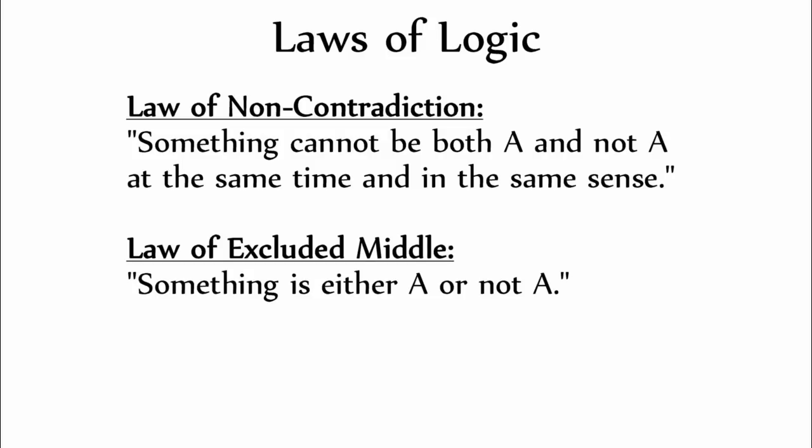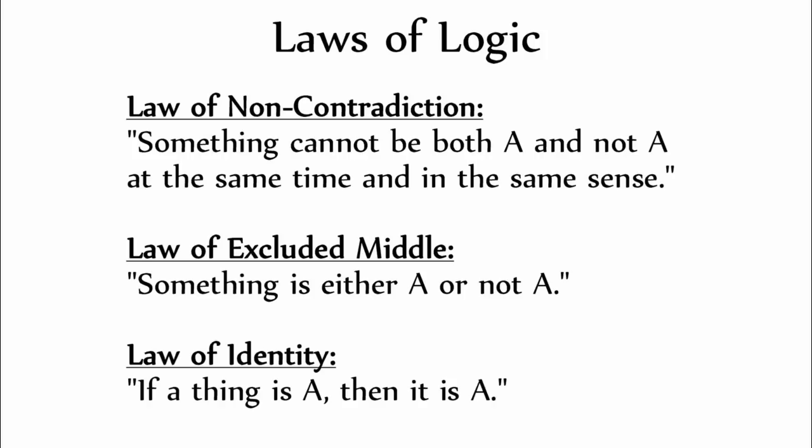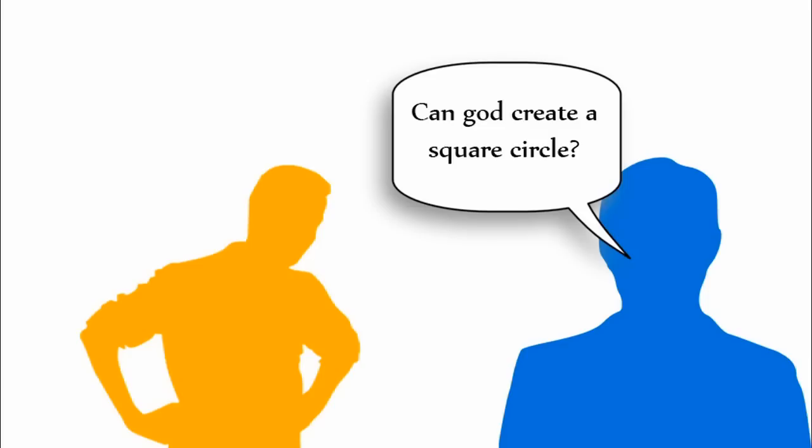Something is either A or not A, as stated by the law of excluded middle. And if a thing is A, then it is A, as stated by the law of identity. Therefore, believers are forced to answer the question of whether God can create a square circle with a resounding no.